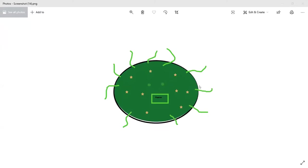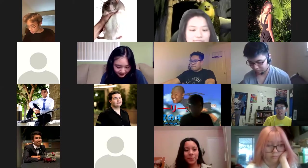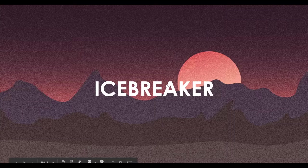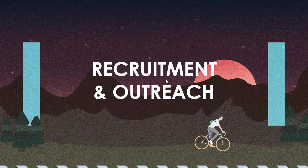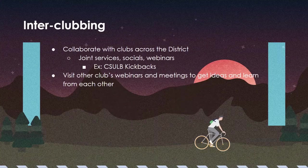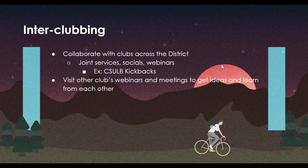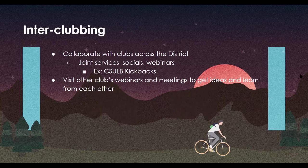Thank you everyone for sharing and for participating. We'll be continuing on with the rest of the webinar. The next thing we'll be talking about is recruitment and outreach. Starting off, we'll be talking about inter-clubbing. For recruitment, make sure to collaborate with other clubs across the district — it's a really good opportunity for you to meet other people outside of your home club. You could have joint services, socials, webinars, even joint meetings.